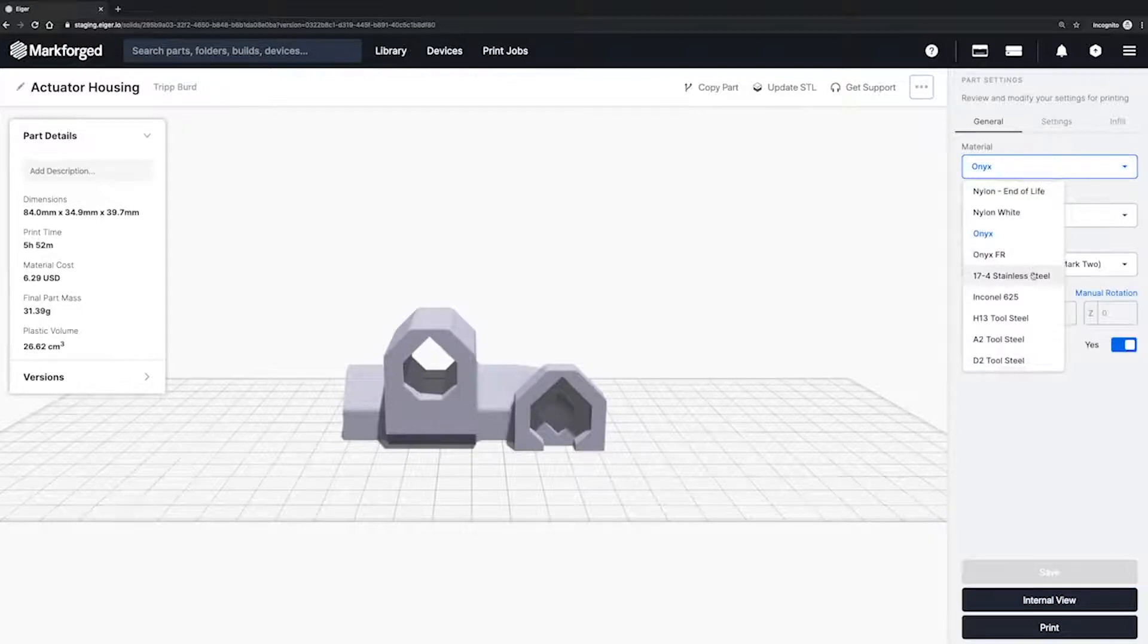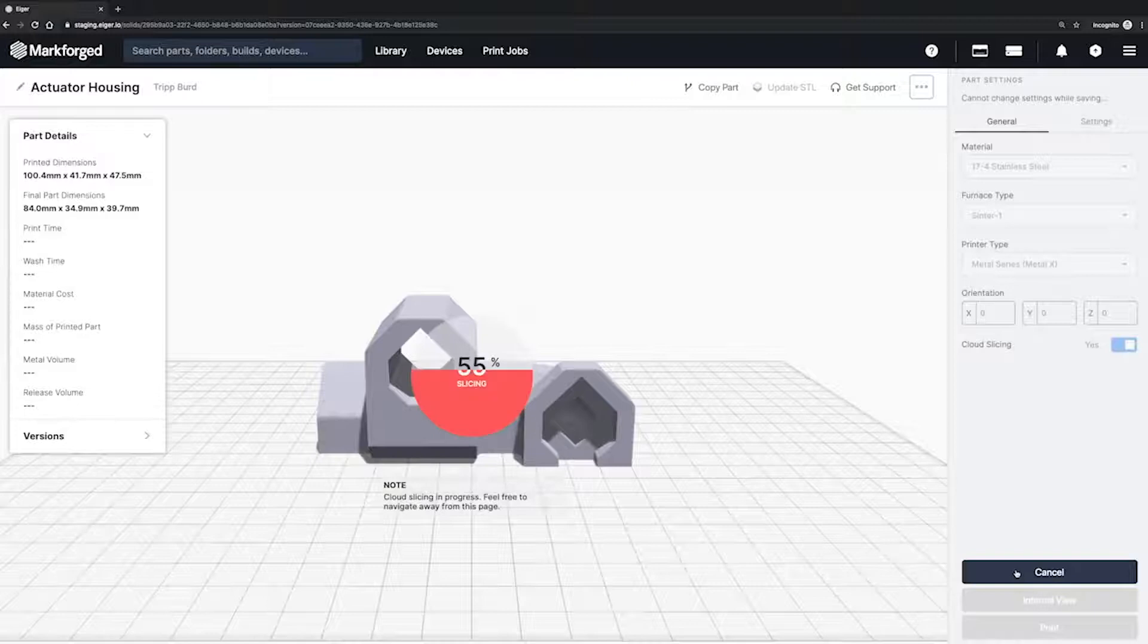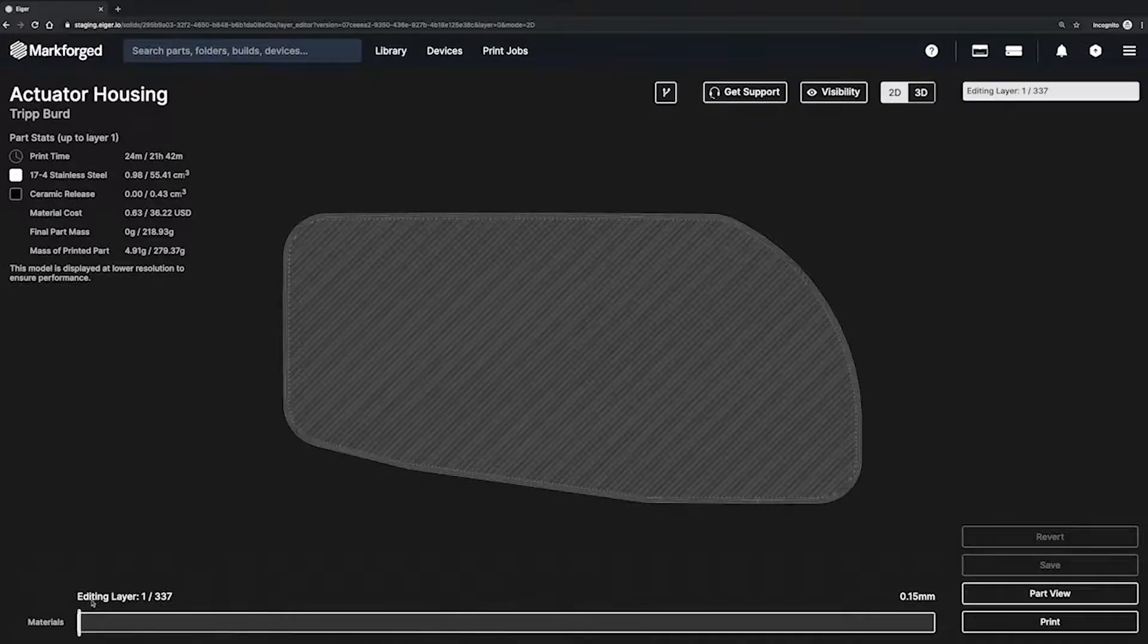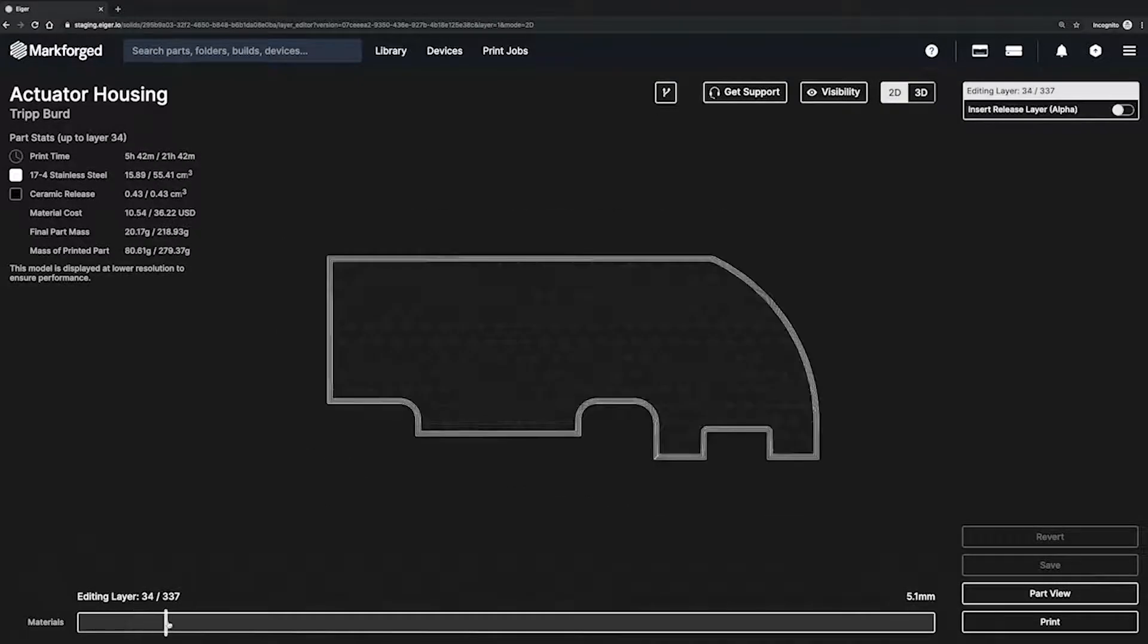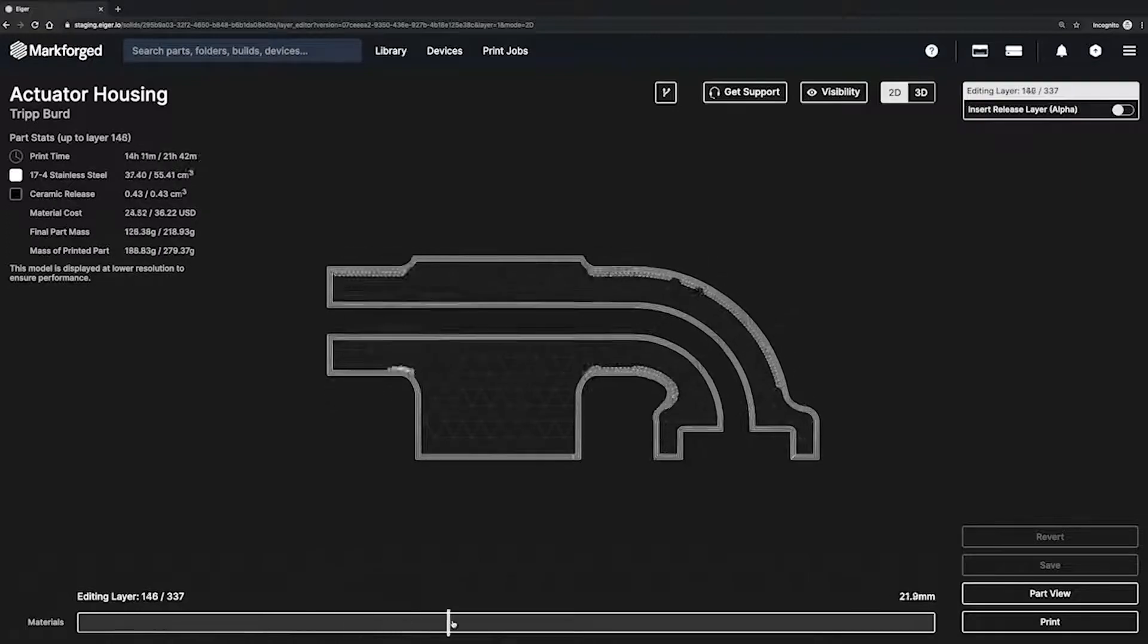When your part slices for metal 3D printing, it gets scaled up to account for shrink and deformation in the downstream processes. It then slices your part into discrete layers and identifies overhang features and builds supports and a raft underneath your part. As we go through printing, washing, and sintering, IGR will monitor the part's progress along the way. Let's start this print and go to the Metal X.